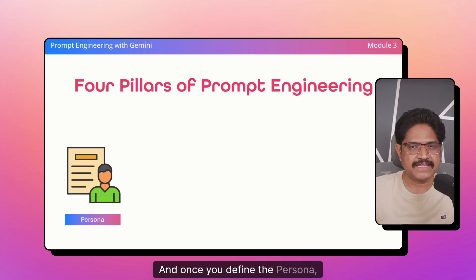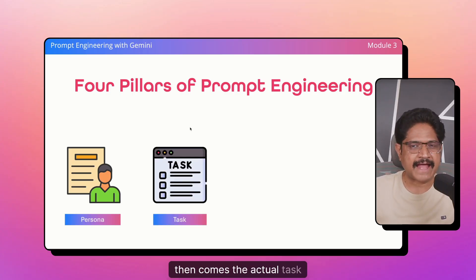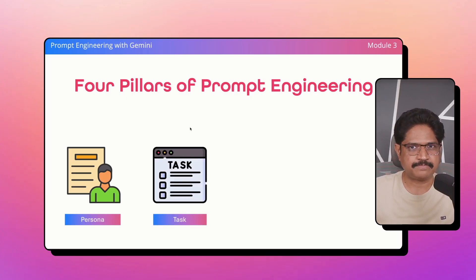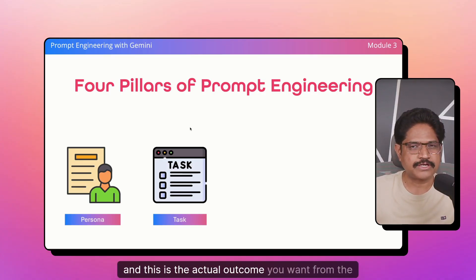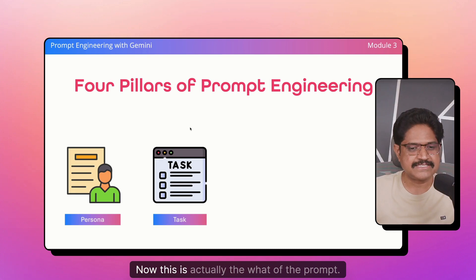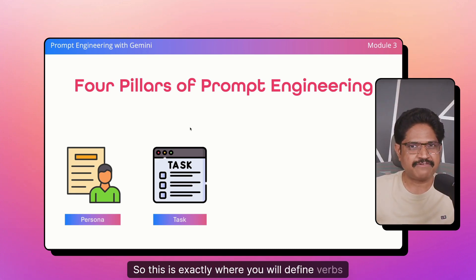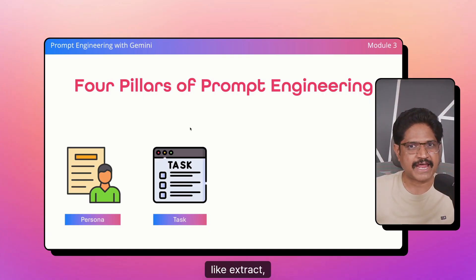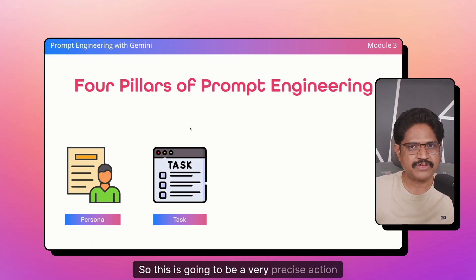Once you define the persona, then comes the actual task. The task is the verb — this is the actual outcome you want from the LLM. This is the what of the prompt. This is where you will define verbs like extract, summarize, translate, generate. This is going to be a very precise action that you are assigning to the LLM.